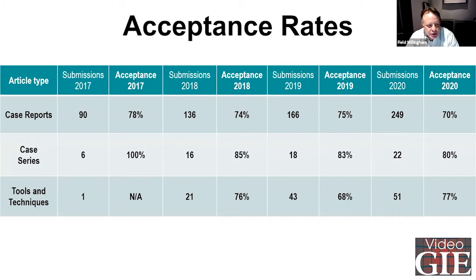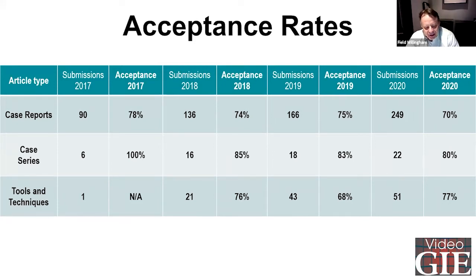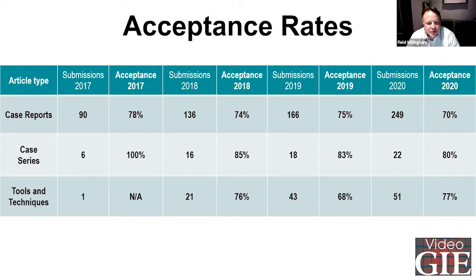We also try to take a lot of the work that's submitted. There are journals that accept only 10 to 15% of their submissions. We want Video GIE to be very inclusive, and so we have tended to take a lot of our submitted work. Think about preparing your cases and sending us a video — we'd love to review it.